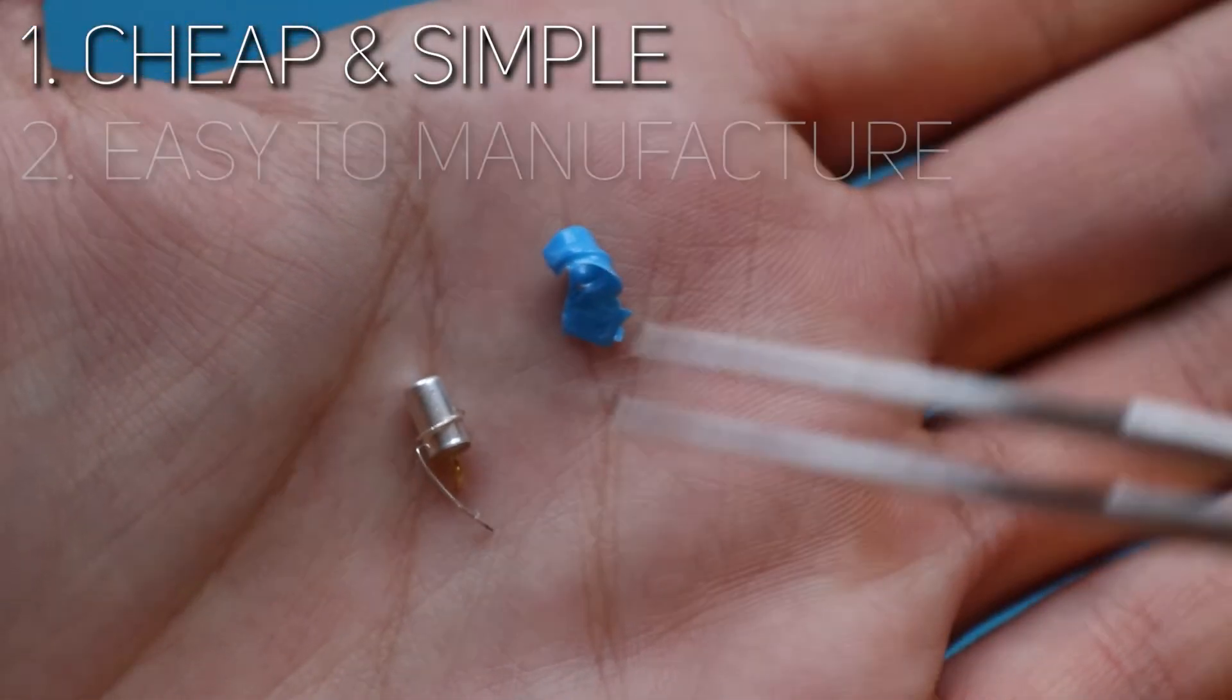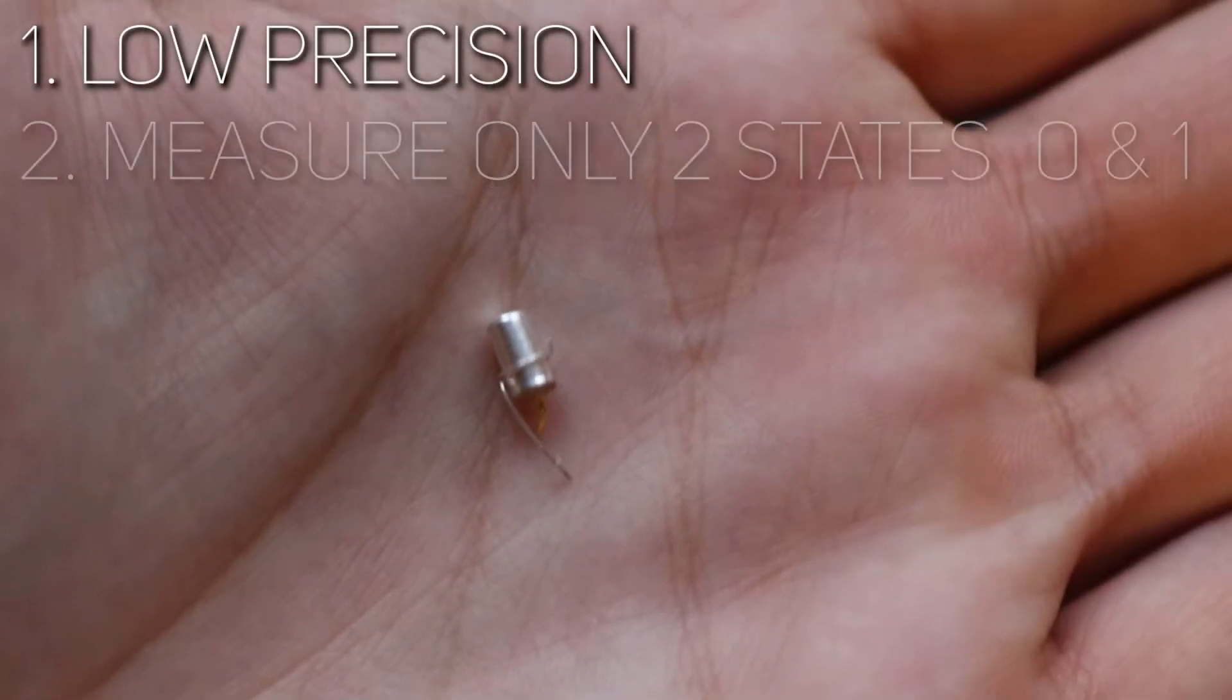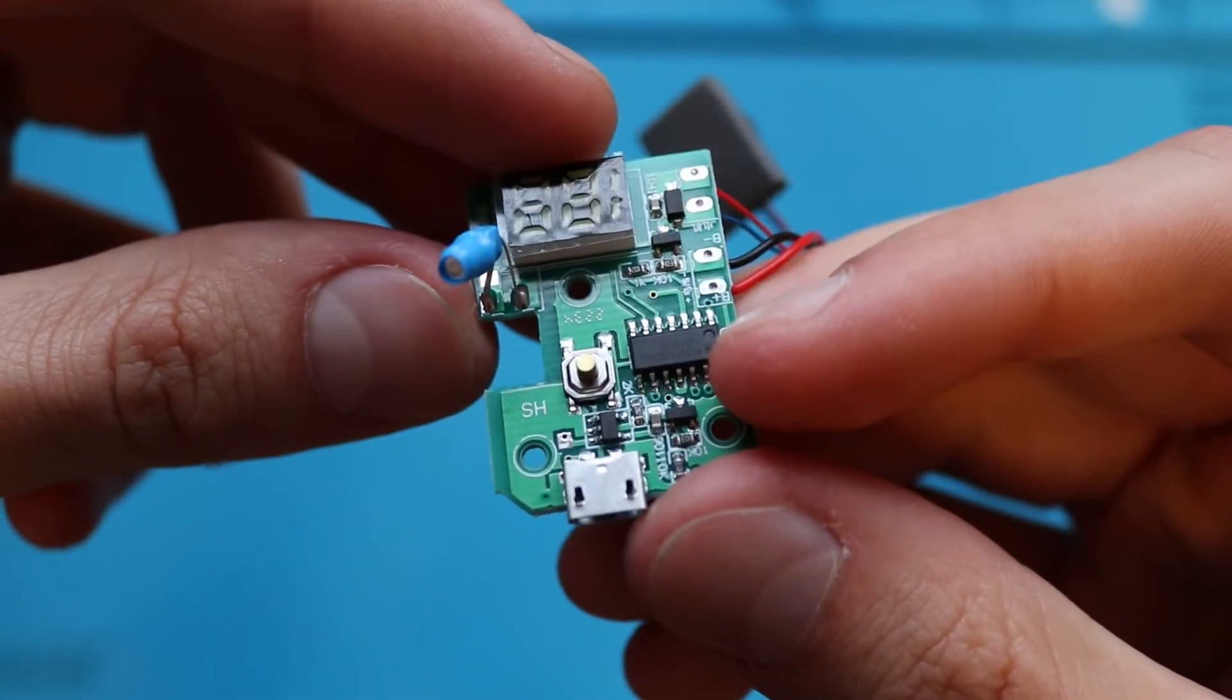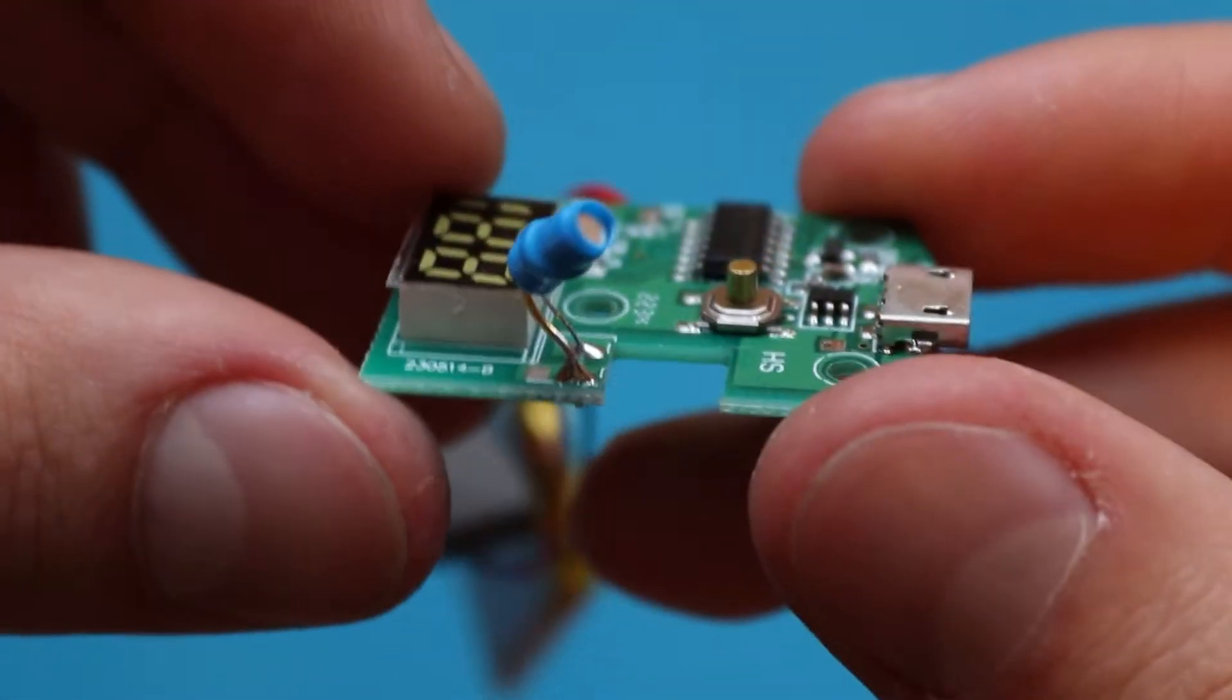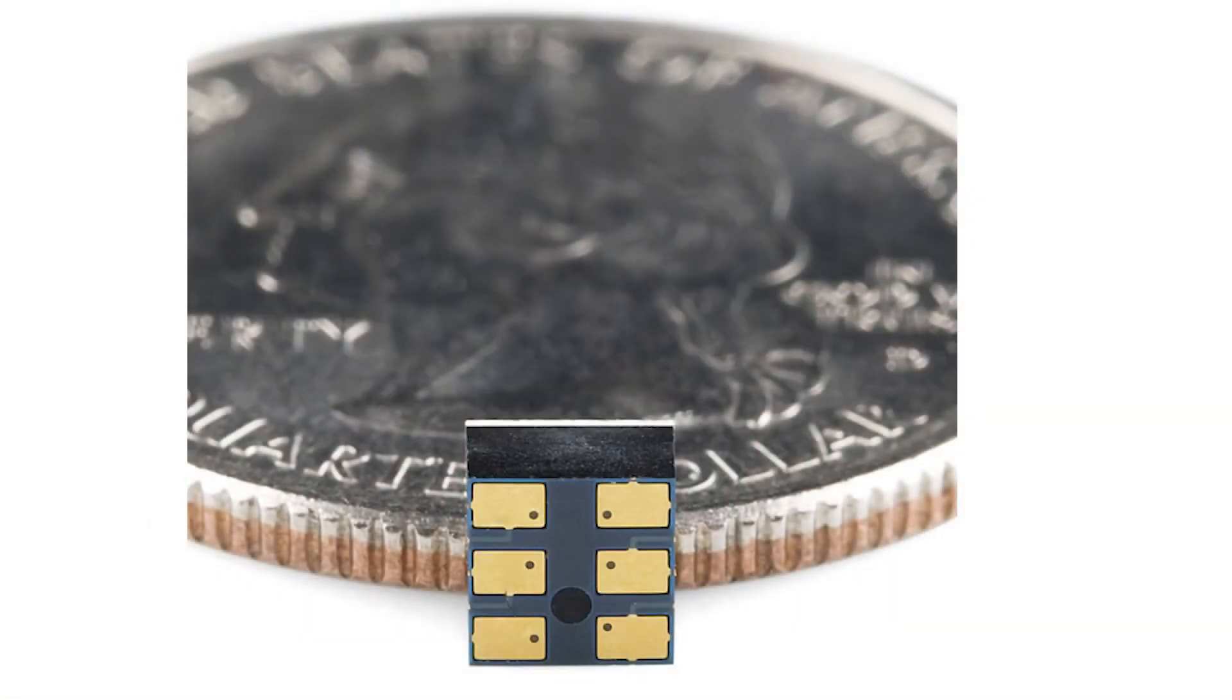So cheap, simple and easy to reproduce are definitely the pluses. But precision, calibration necessity, and its size are obvious minuses. Yeah, also the size. It is really big in comparison to what you can find on the market. You can find much smaller solutions in SMD packages and you just solder them on a PCB, but they are more expensive.